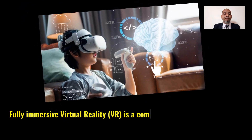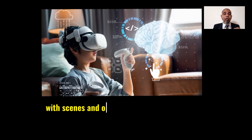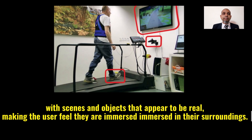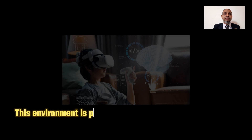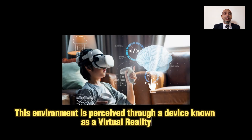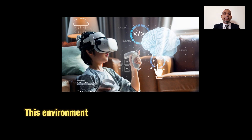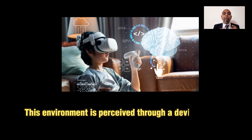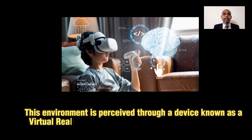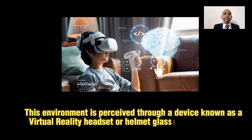Type number two: fully immersive virtual reality. Fully immersive virtual reality is a computer-generated environment with scenes and objects that appear to be real, making the user feel they are immersed in their surroundings. This environment is perceived through a device such as a virtual reality headset, helmet, or glass screen, which gives the user a sense of being present in that virtual world environment.